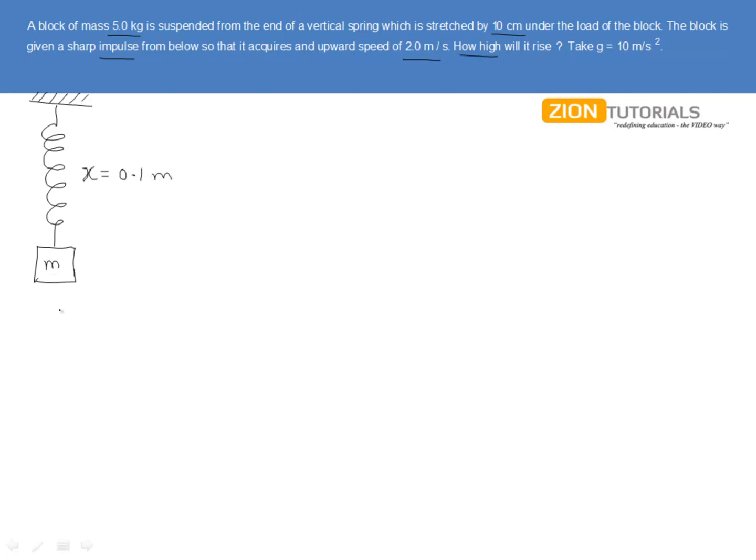Now what happens is that an impulse is given due to which this block gets some change in its momentum, that is it gets some velocity. So it will move up and will reach a height h and then will perform SHM and so on.